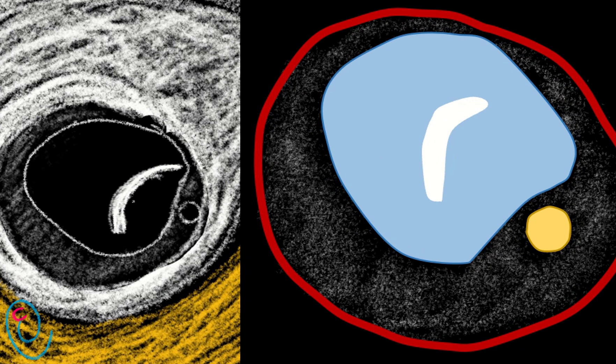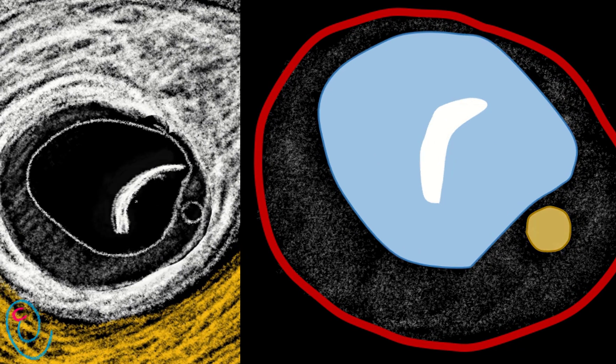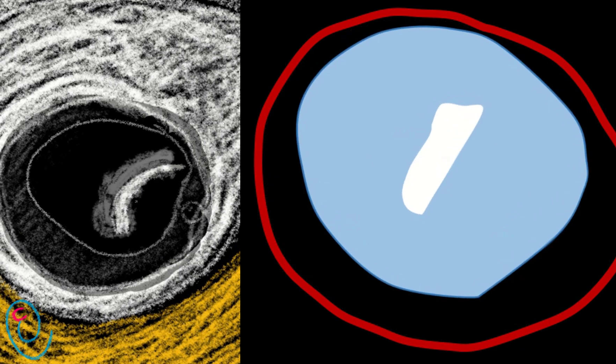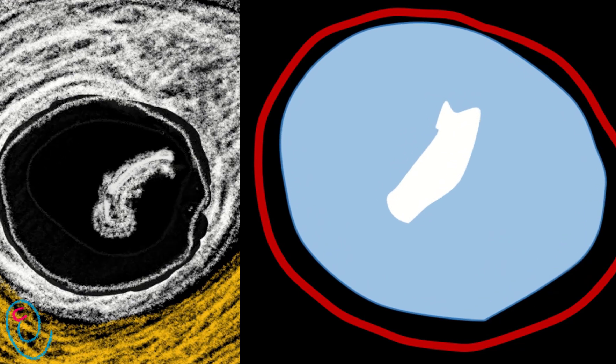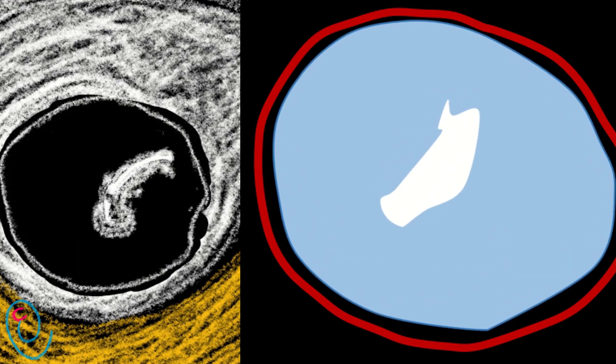The amniotic cavity and chorionic cavity will fuse together at about 14-week gestation, forming a single cavity.